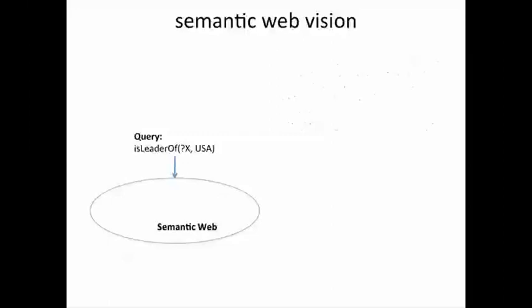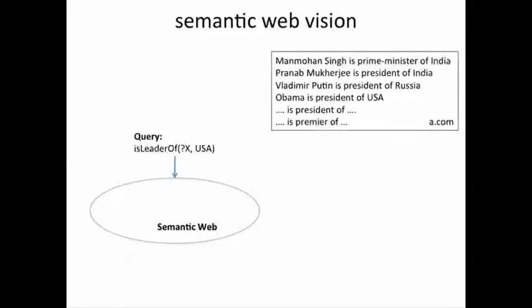We might imagine a site A.com which collects facts by processing lots of web data, as we shall see later this week. So we get facts like: Obama is president of USA, Vladimir Putin is president of Russia, Pranab Mukherjee is president of India, Manmohan Singh is prime minister of India, and many other facts about presidents, premiers, prime ministers, etc.